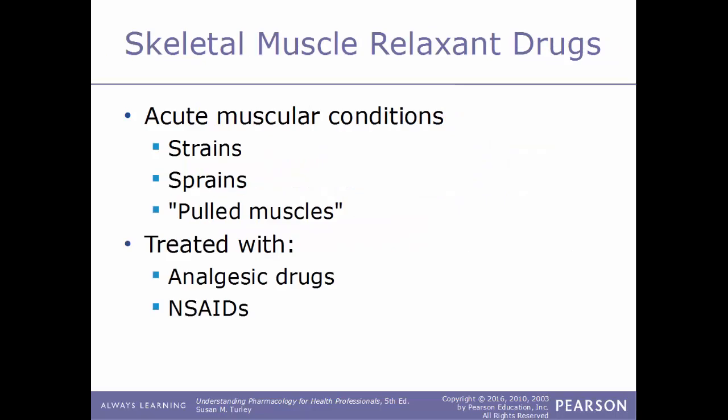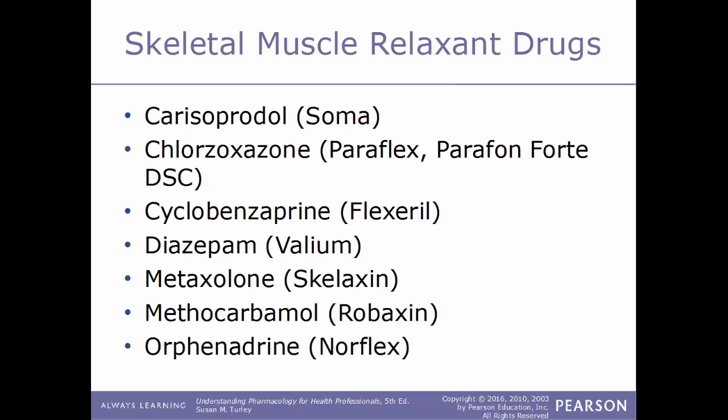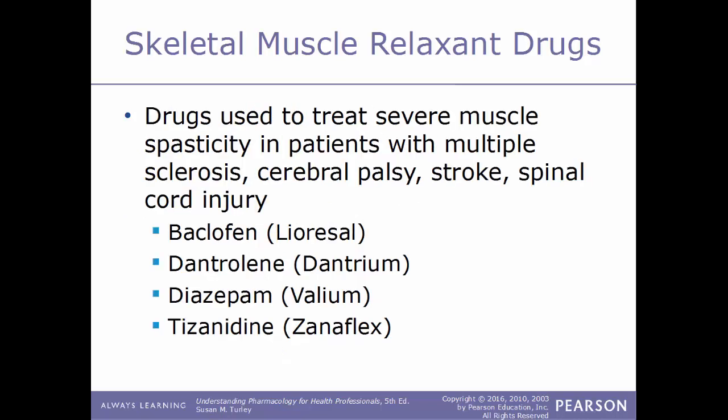Next, skeletal muscle relaxant drugs. Some drugs in this category are used only for acute muscular conditions such as strains, sprains, or pulled muscles, and are used alongside analgesics, NSAIDs, rest, and physical therapy to relieve muscle spasms and stiffness. Examples include carisoprodol (Soma), chlorzoxazone (Paraflex/Parafon Forte DSC), cyclobenzaprine (Flexeril), diazepam (Valium), metaxalone (Skelaxin), methocarbamol (Robaxin), and orphenadrine (Norflex).